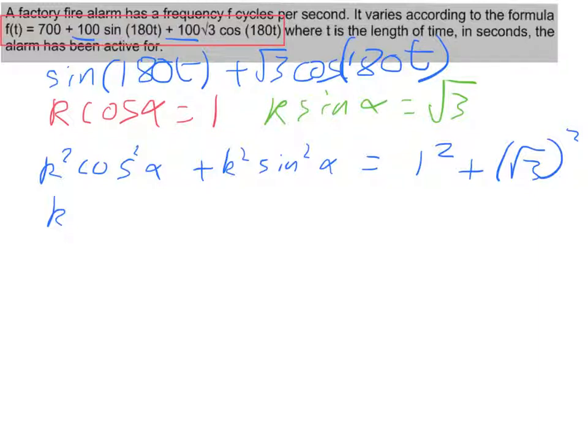Add them together, I'm now going to take out a common factor of k. Because if we look, both of these things have got k squared, so I've taken out a common factor of k squared.